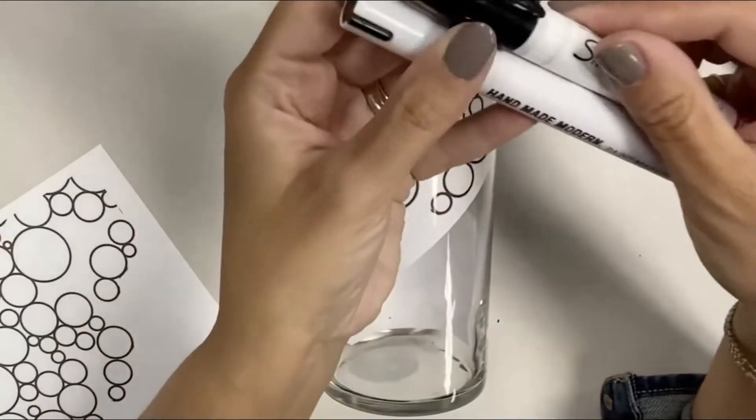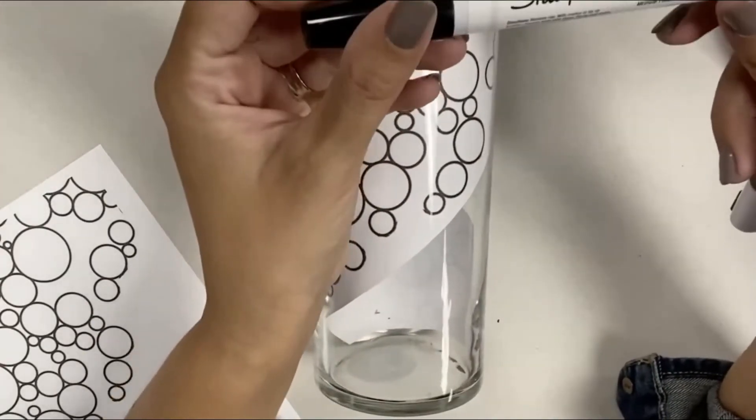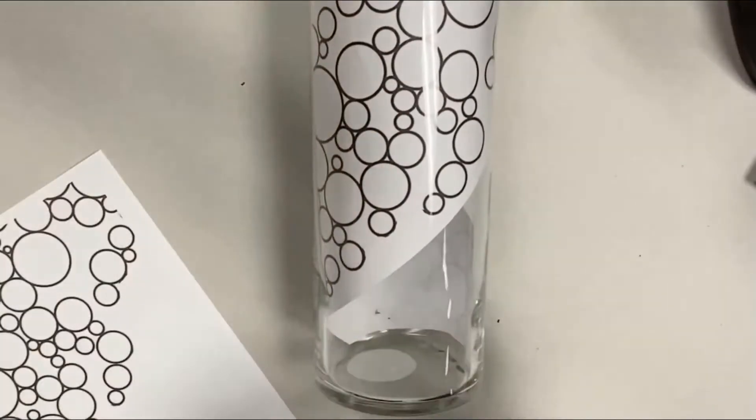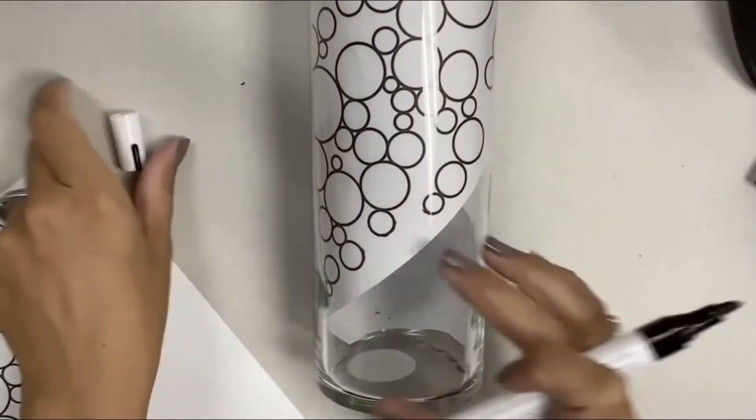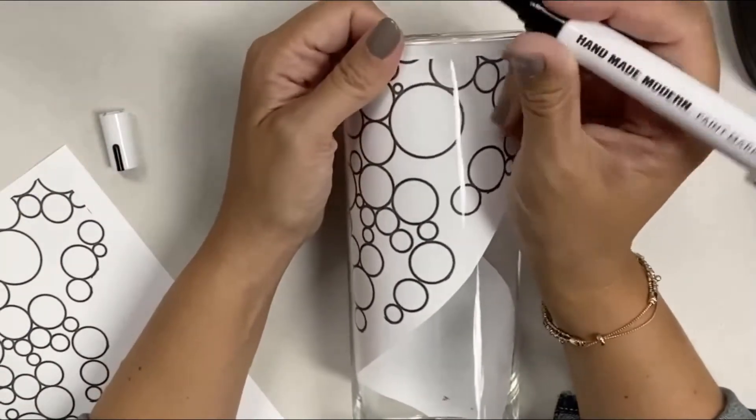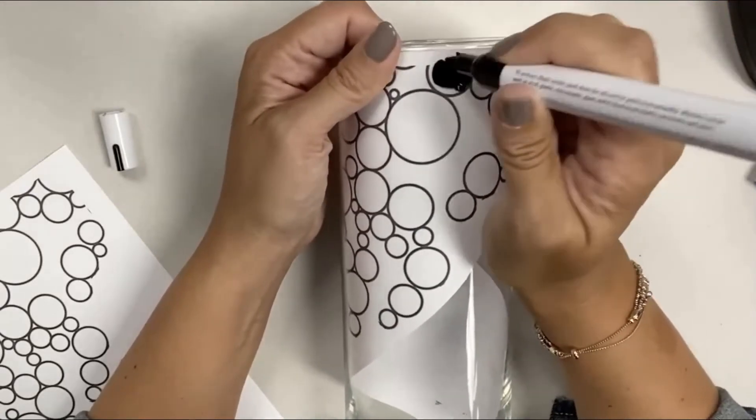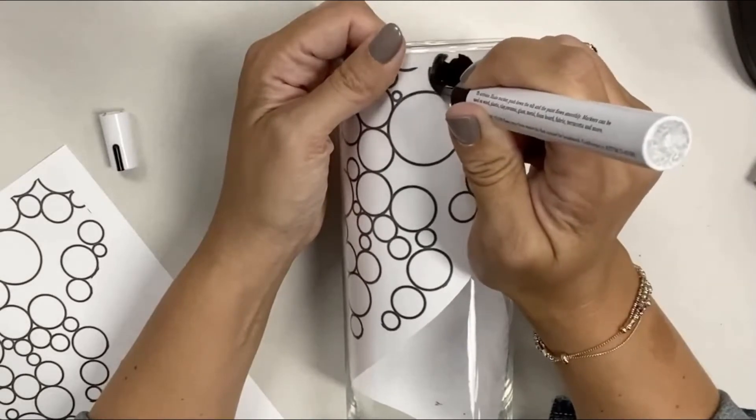So I have these—they're a couple different paint markers. This one I know is from Target, this black one, and then I have a black Sharpie one. So either one works, and what I'm going to do is go through and begin by coloring in my design.